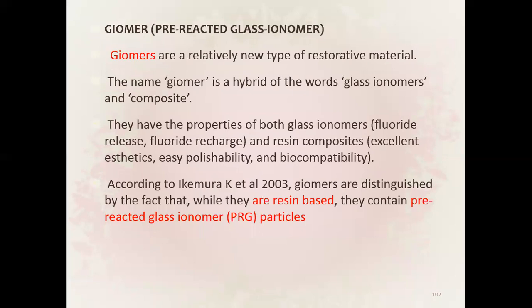Next we have giomer, which is also a pre-reacted glass ionomer. Giomers are a relatively new type of restorative material. The name giomer is a hybrid of the words glass ionomer and composite. They have the properties of both glass ionomer — that is, fluoride release and fluoride recharge — and resin composite: excellent aesthetics, easy polishability, and biocompatibility.